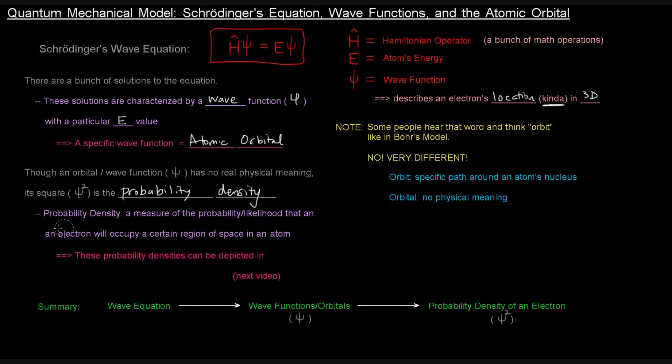So, these probability densities can be depicted in electron probability density diagrams, which is what the next video is about. So, basically, what's happening here? We're talking about Schrödinger's equation, wave functions, and atomic orbitals.